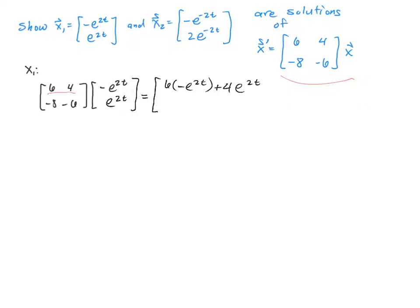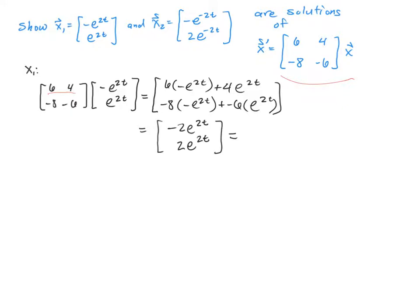For the next row, it's going to be negative 8 times negative e to the 2t plus negative 6 times e to the 2t. If we simplify this down, we've got negative 6 of them plus 4 of them, which makes negative 2 e to the 2t. Then we have positive 8 of them minus 6 of them, making positive 2 of them. Looking at x1 and taking its derivative, we get negative 2 times e to the 2t and then 2 times e to the 2t by the chain rule.